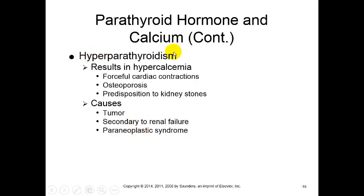Hyperparathyroidism will result in hypercalcemia - really high levels of calcium. This can cause more forceful cardiac contractions, so your heart is actually beating too hard. Hyperparathyroidism also leads to osteoporosis because you are breaking down bone to increase calcium levels. Due to these high levels of calcium in the blood, it can also lead to kidney stones from high levels of calcium in the urine.